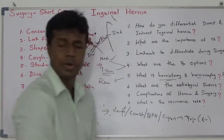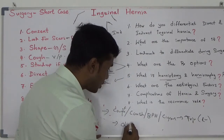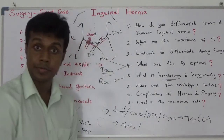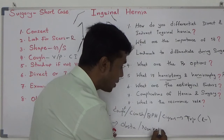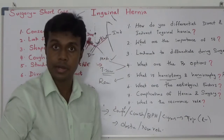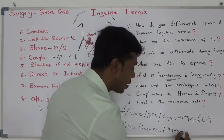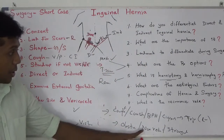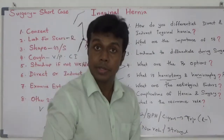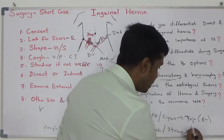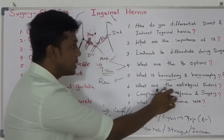What are the complications of hernia? It can obstruct, it can be non-reducible — you can't push it back. It can strangulate. Some bowel segment can be entrapped — incarceration. Those are the complications of hernia.